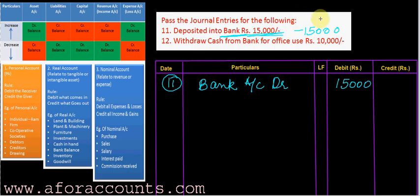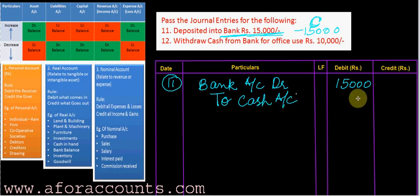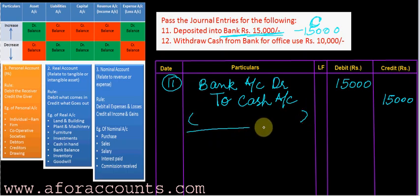It is recorded as 'C' for contra. What is going out or decreasing is cash. Cash is an asset, but this time it is decreasing. An asset when it decreases has a credit balance — so you will credit cash. Narration: being amount deposited into bank.